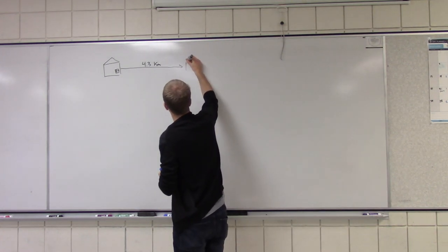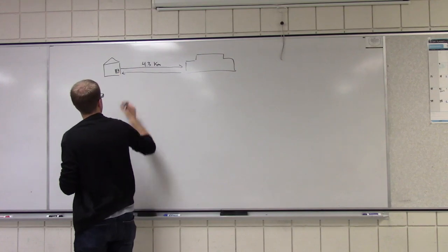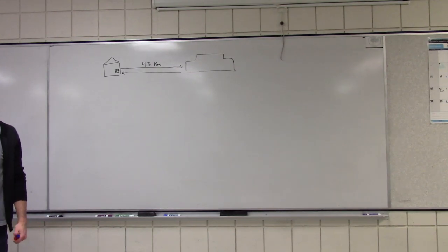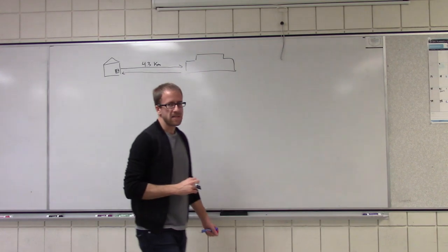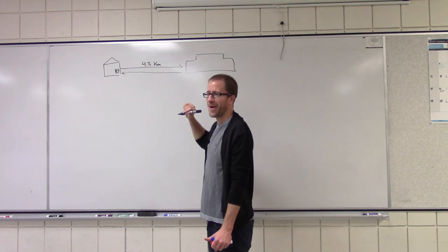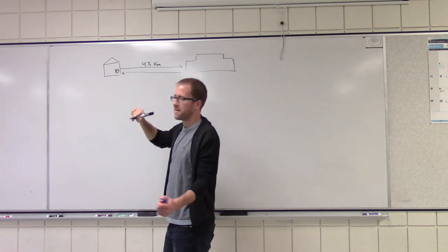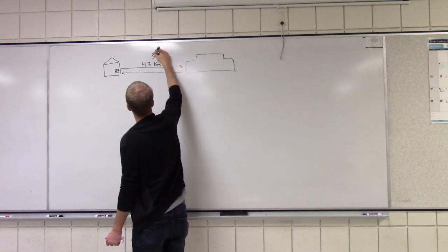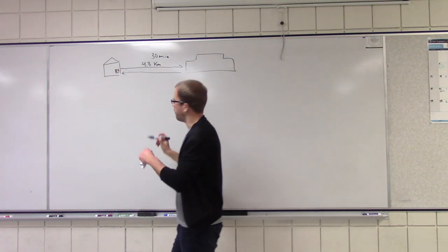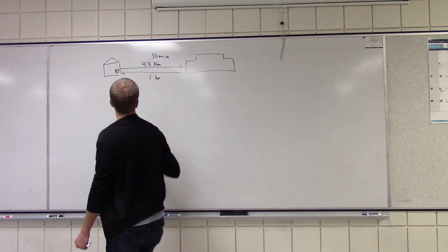He walks to school in the morning — good old Fort Richmond Collegiate. At the end of the day he decides to walk home. Let's say that Kenny was feeling rather spry in the morning and decided to do this 4.3 kilometer walk. You're feeling rather energetic, and you did this 4.3 kilometer walk in the morning in 30 minutes. At the end of the day, it's a little nicer out — not as blisteringly cold. We'll say the walk home took an hour.